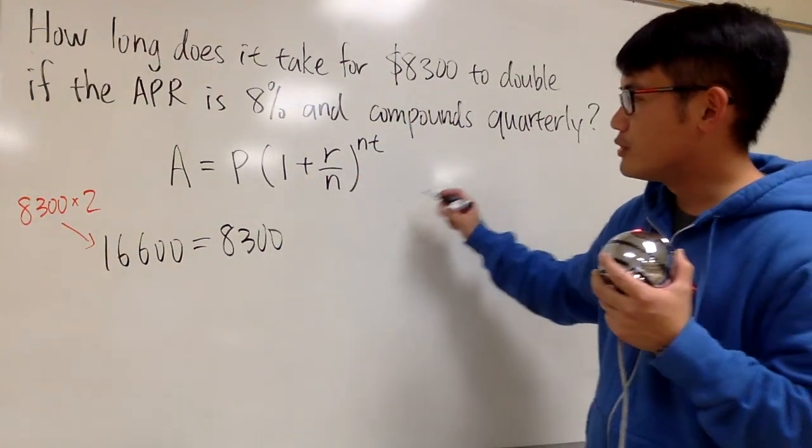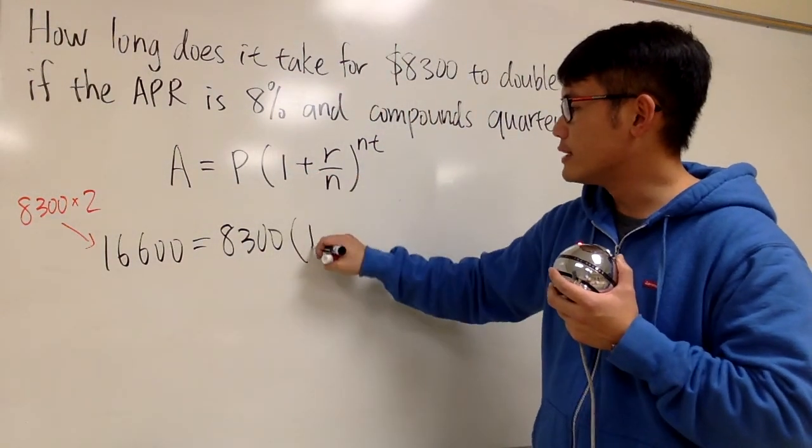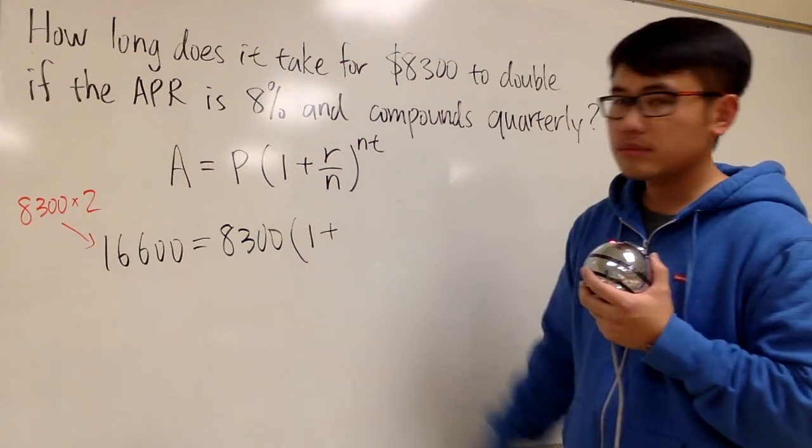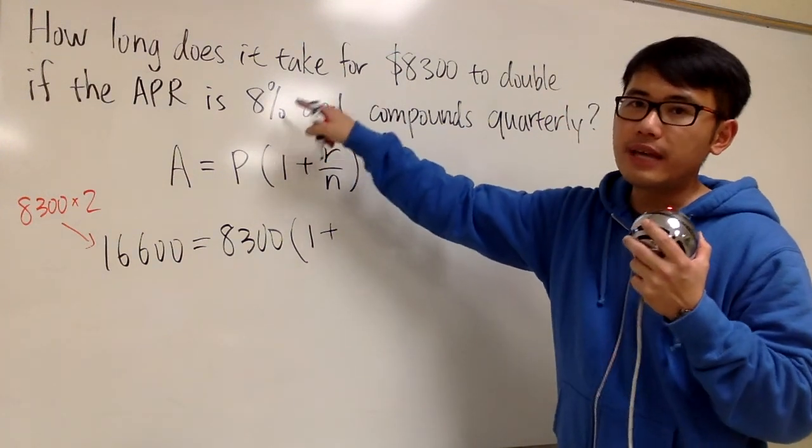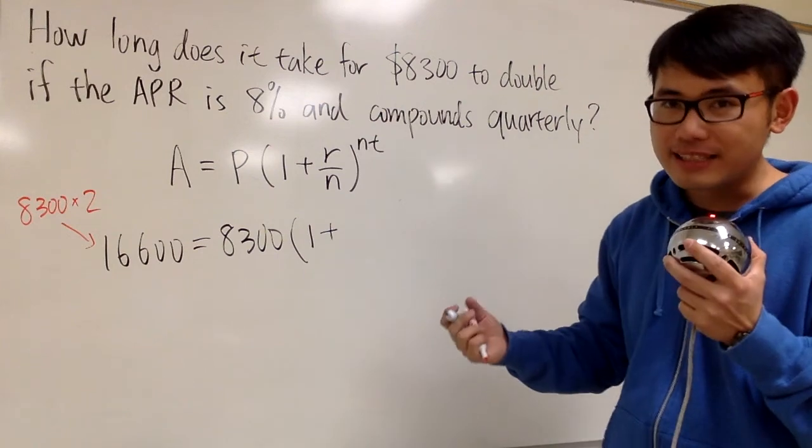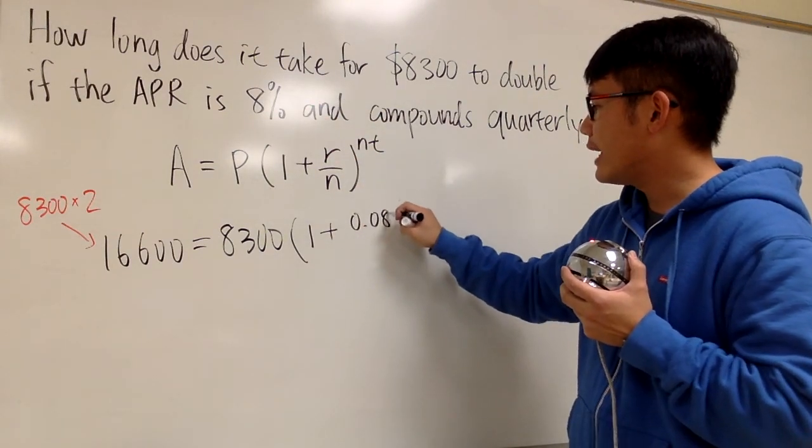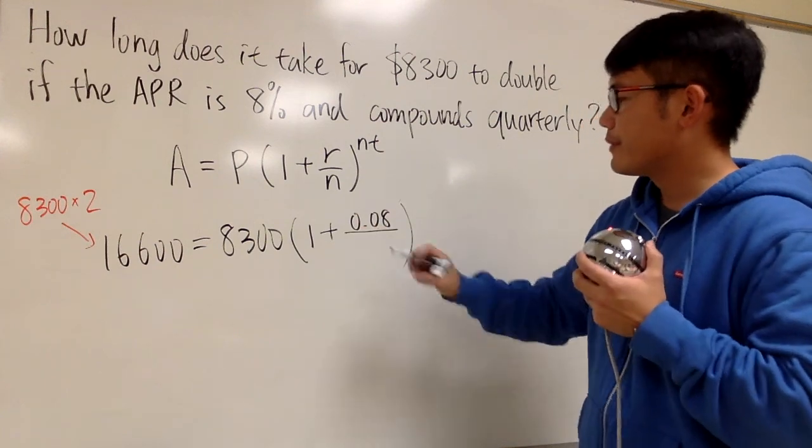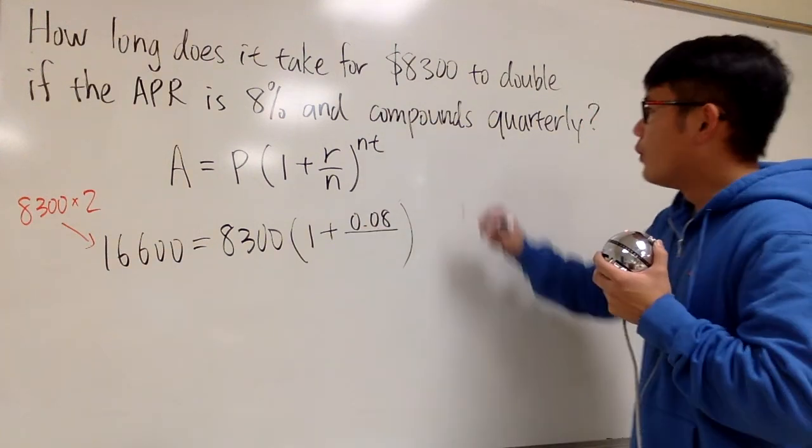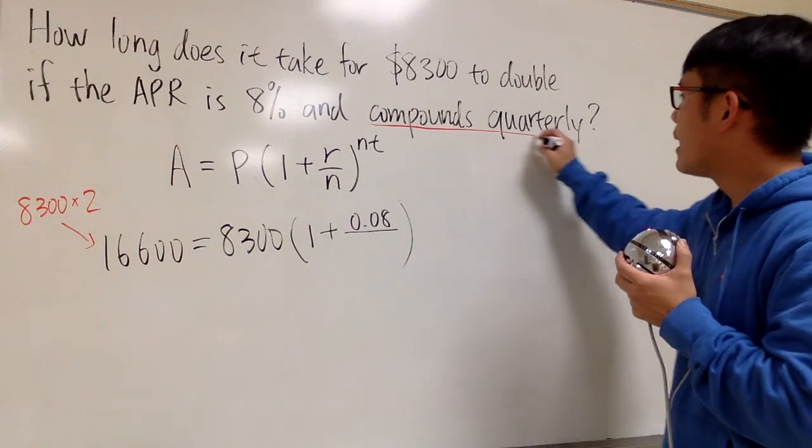And of course, we're going to finish the rest of the formula. The 1 is always 1. And we add the R, which is the interest rate, which is 8%. And we change that to decimal. 8% in the decimal form is 0.08. And over what? Well, right here it says compounds quarterly.